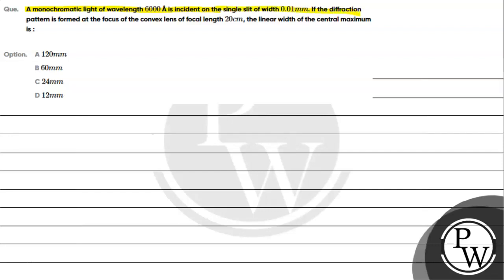If the diffraction pattern is formed at the focus of the convex lens of focal length 20 cm, the linear width of the central maximum is: option A, 120 mm; option B, 60 mm; option C, 24 mm; option D, 12 mm.